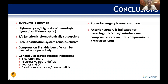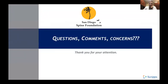In conclusion, thoracolumbar trauma is relatively common in the spine world. It's usually high energy with a high rate of neurologic injury, especially in the thoracic spine. The thoracolumbar junction transition zone is most susceptible as forces concentrate there going from a stiff to a flexible region. We're still seeking the best classification system. Main surgical indications are three-column injuries, progressive neurologic deficit, kyphosis greater than 30 degrees, and canal compromise. Surgical options include posterior, anterior, or combined approaches.